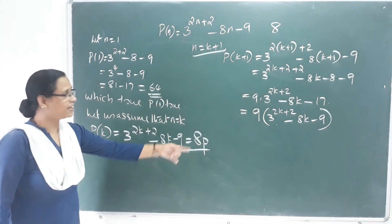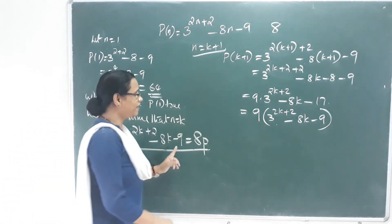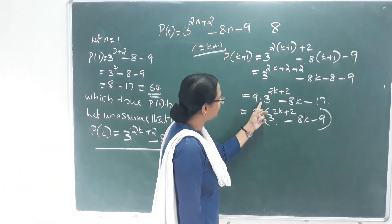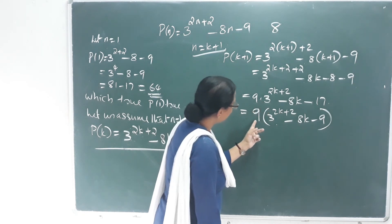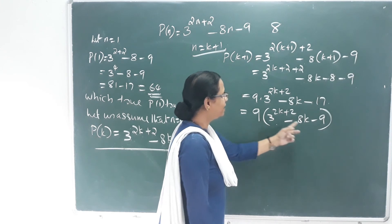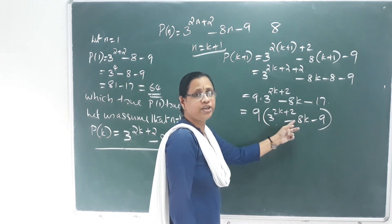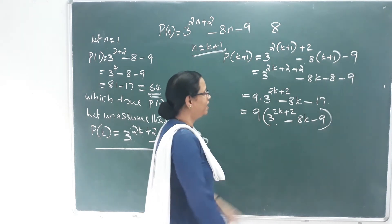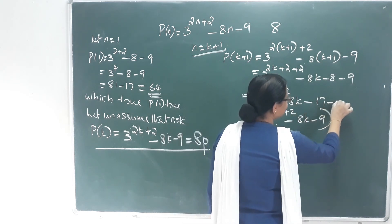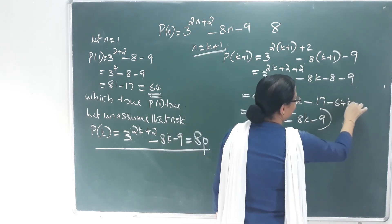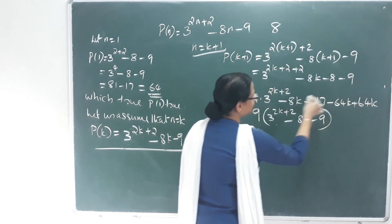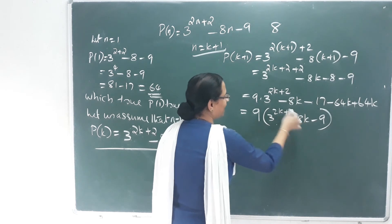After distributing, here is 64k and we add and subtract as needed. 9 into 9 is 81. Here we have 1 plus 64. Here is minus 64 plus 64. Taking 9 outside, the balance is 8p.